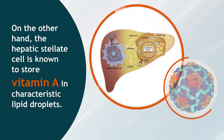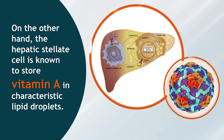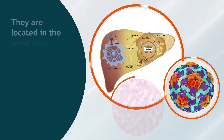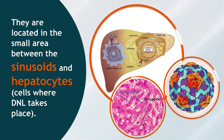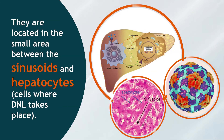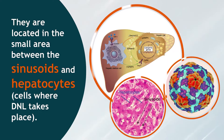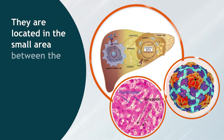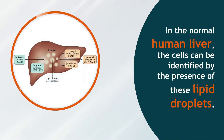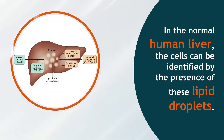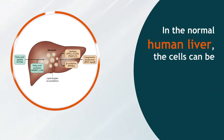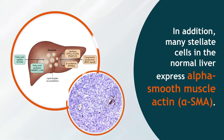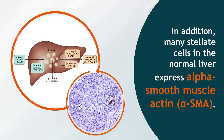The hepatic stellate cell is known to store vitamin A in characteristic lipid droplets. They are located in the small area between the sinusoids and hepatocytes — cells where De Novo Lipogenesis takes place. In the normal human liver, stellate cells can be identified by the presence of these lipid droplets, and many of them express alpha-smooth muscle actin.